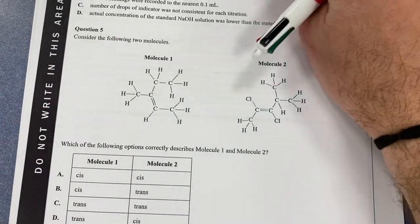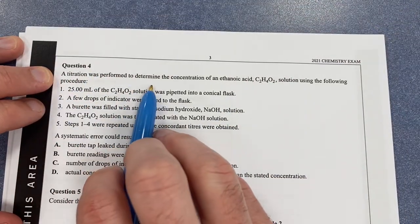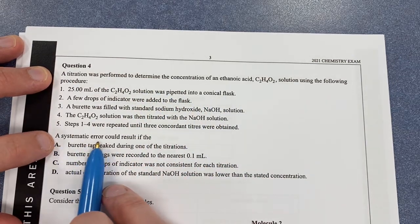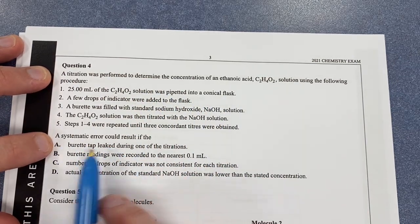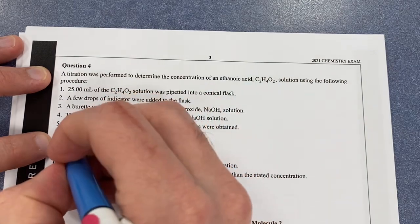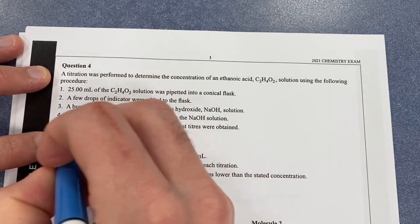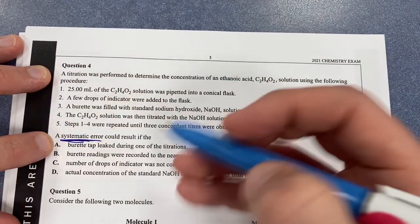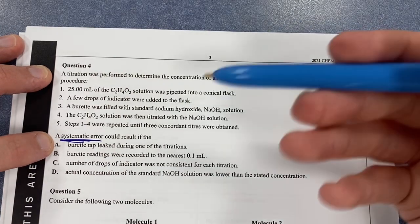Let's move on to question four. A titration was performed to determine the concentration of ethanoic acid. A systematic error that could result - what would be a systematic error? A systematic error is one that occurs the same for every trial you do. So it happens systematically.